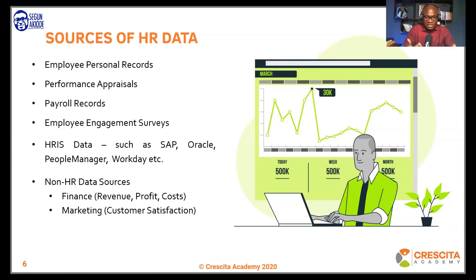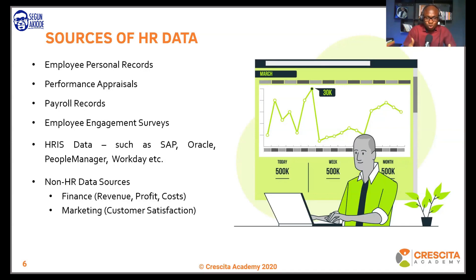HR metrics are measures of how the organization is performing in terms of HR initiatives. For example, to calculate turnover rate — also called labor turnover — I need the headcount at the beginning of the period and the number of exits during that period. Dividing exits by total workforce gives me the labor turnover rate. That metric can only be derived from your HR data sources.